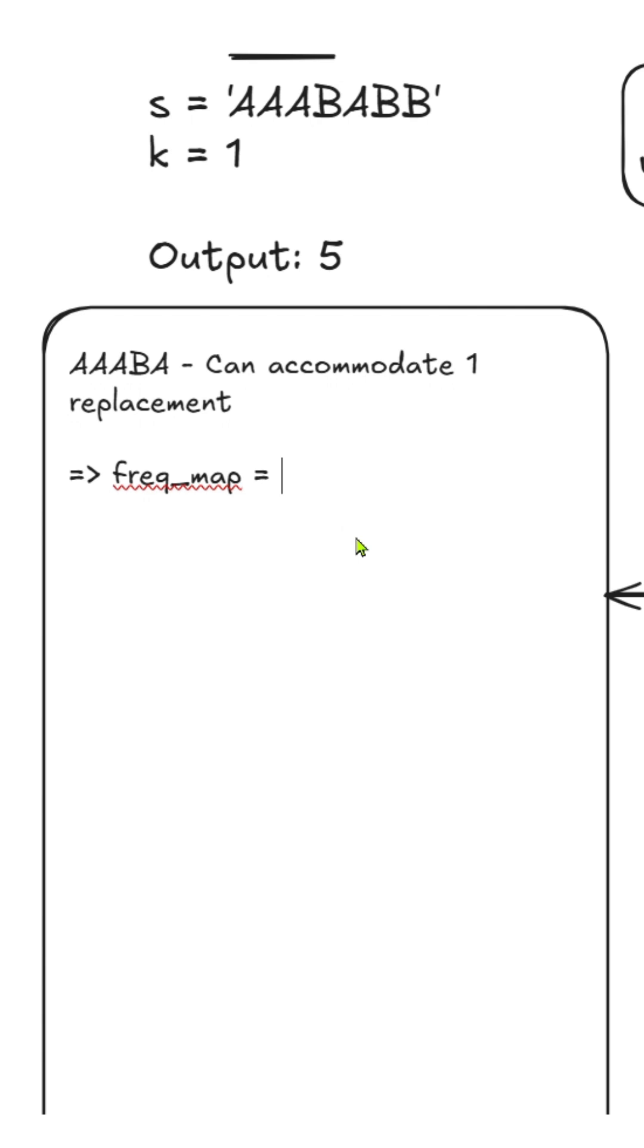We find the frequency mapping but B's frequency map or frequency count would not matter because we just care about the max frequency. The sum of max frequency plus the k replacements would give us the substring's ideal size.